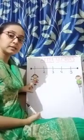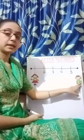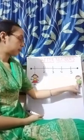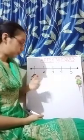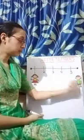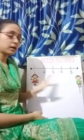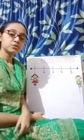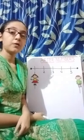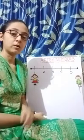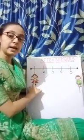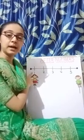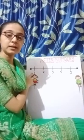Children, can you see the boat? This is Ria, and this is Ria's brother. Ria wants to go near her brother. Now what she has to do? She has to move a step forward to go near her brother. Now can you see children? Ria is standing at number 1.